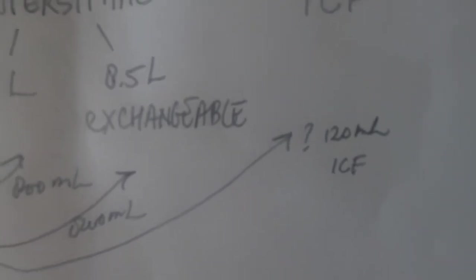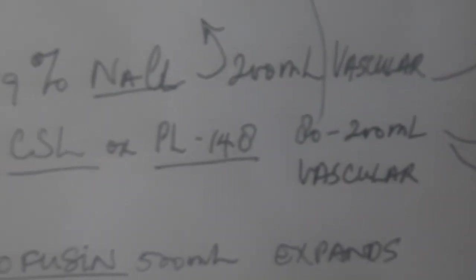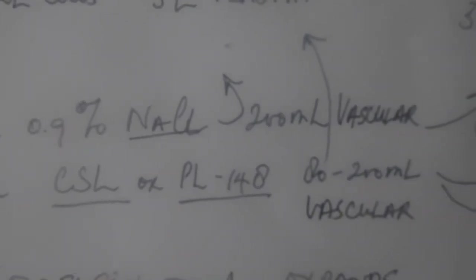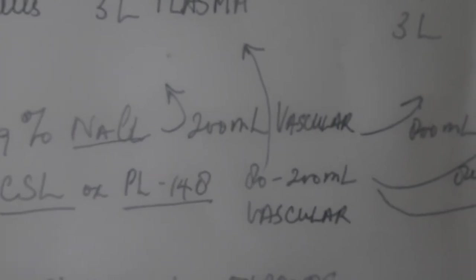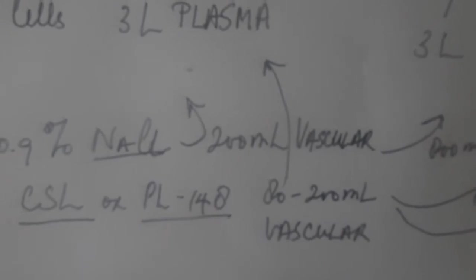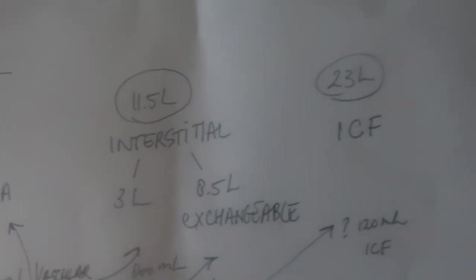And a certain amount will also go intracellularly. So very interesting to see that when we're actually giving a liter, the majority - 80 percent or more - doesn't stay in the blood circulation but goes particularly in the interstitial compartment, and some might even go intracellularly.